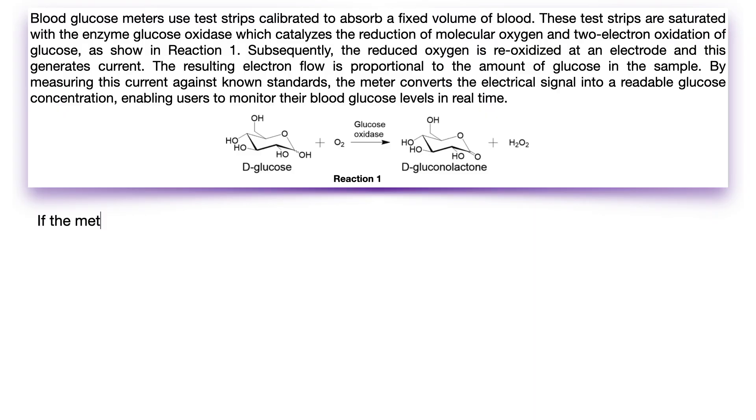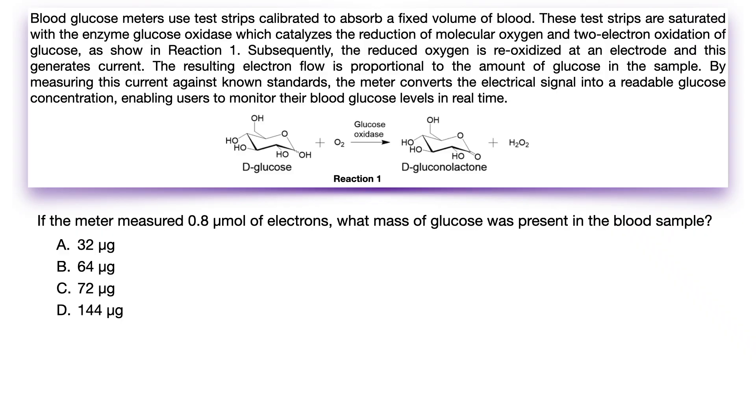The question asks, if the meter measured 0.8 micromole of electrons, what mass of glucose was present in the blood sample? I know after reading the question you want to jump to the passage because you may feel a little lost about the meter in the blood sample, whether or not you read the passage, and overwhelmed by how you're going to go from micromoles of electrons to micrograms of glucose, because it immediately feels like there's not enough information provided to calculate an answer. But don't immediately jump to the passage.